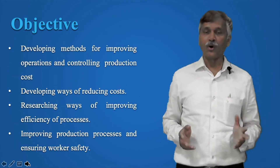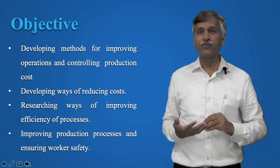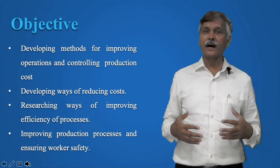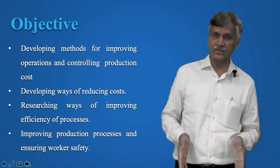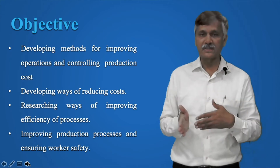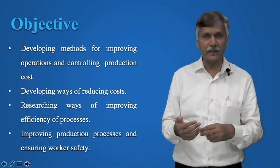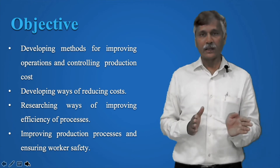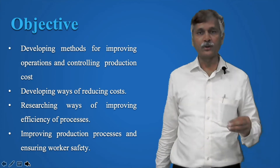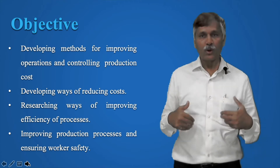The objectives of industrial engineering are: designing a system or developing a method for better operations and controlling production cost; finding out different ways of reducing cost — for example, if the application does not require very precise or sophisticated material, you can use a cheaper material depending on the requirement; and improving the efficiency of the process when developing a new method or integrated system of machines and materials.